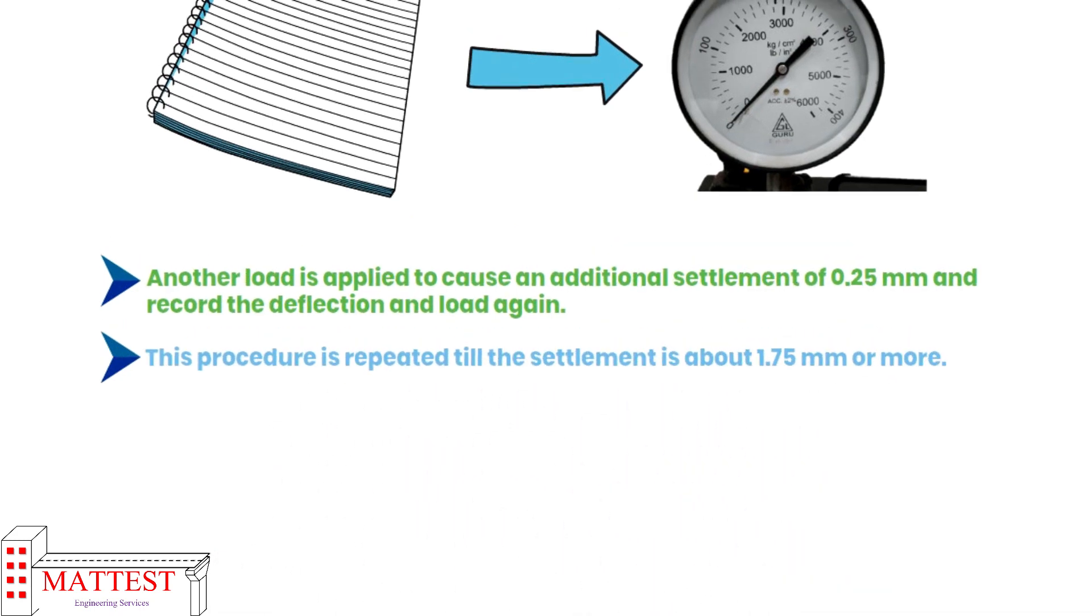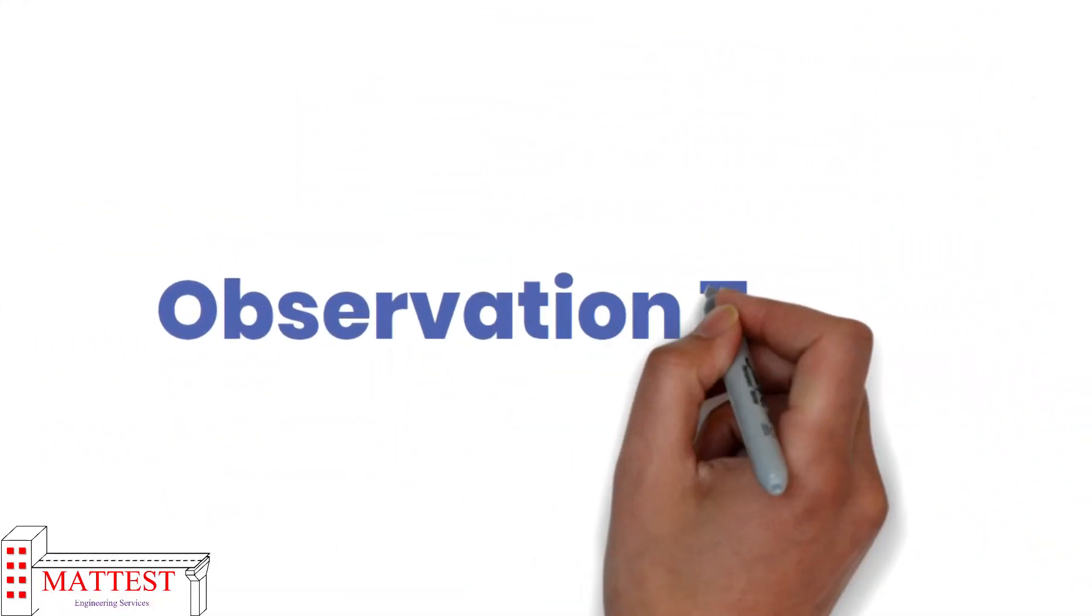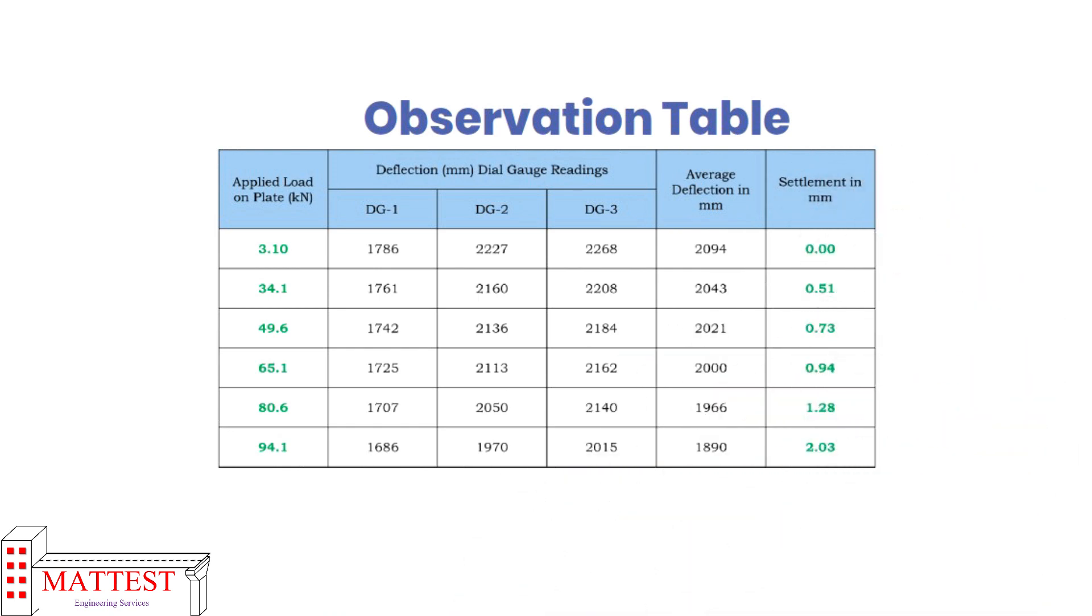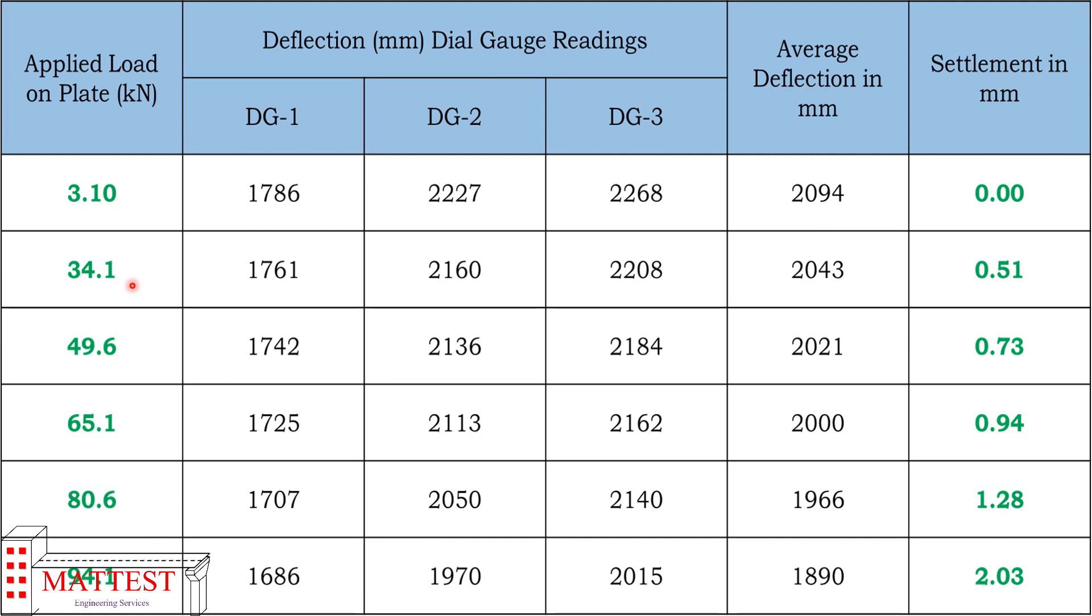Now if you look at this table, this is the test data that we have obtained after completion of plate load test. First we applied 3.10 kilo newton of load and waited for 15 minutes. After that we noted readings in three dial gauges, average is taken and at this applied load settlement was zero. Next we applied 34.1 kilo newton of load and again we noted the readings and the settlement was 0.51 mm. Likewise we applied different loads till the settlement reached to 1.75 mm or more. When we applied 94.1 kilo newton of load, the settlement was 2.03 mm. As you can see here, the settlement was above 1.75 mm.